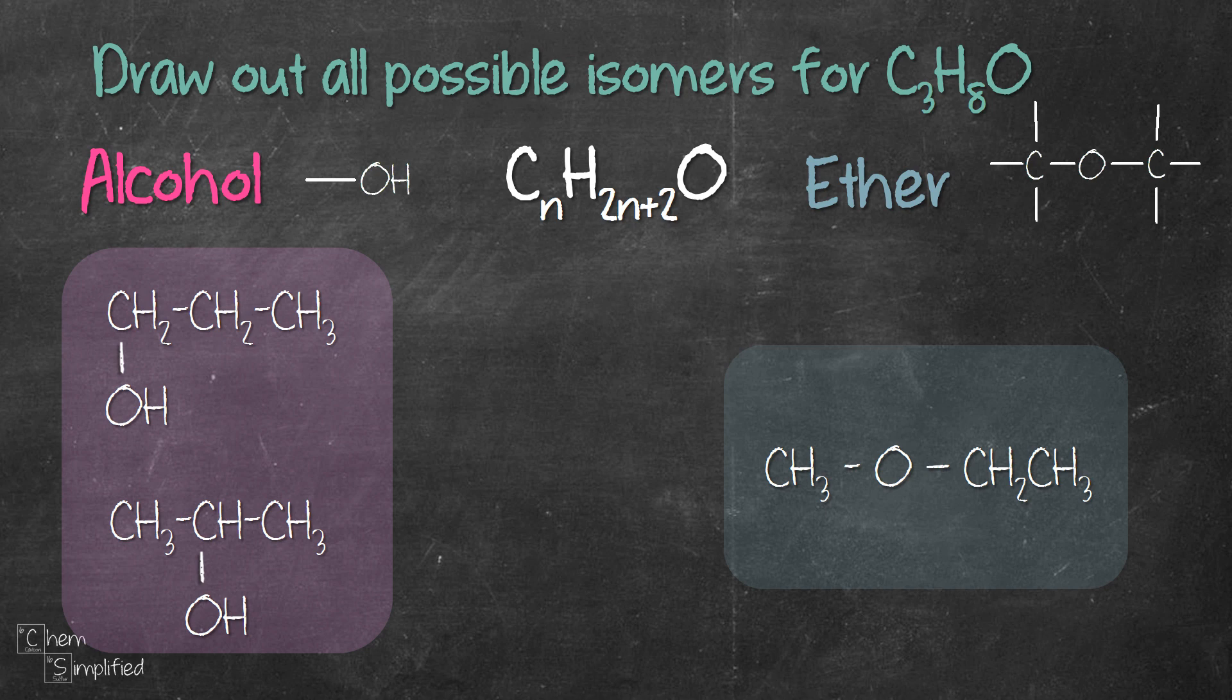CH3OCH2CH3. There we go. Three isomers for C3H8O. Two of them are alcohol and one ether.